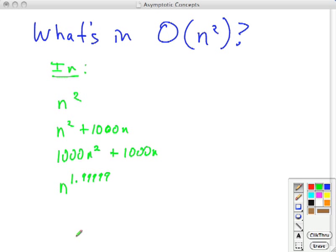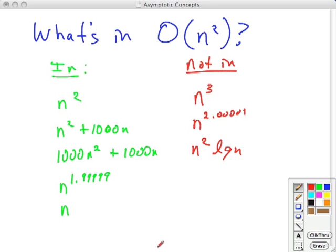And of course, since it's an inequality, essentially, much slower growing functions are also in there. Examples that are not in big O of n squared would include n cubed. In fact, anything with an exponent slightly larger than 2. Or with other terms that also grow with other factors, such as n squared log n.